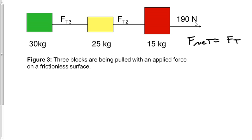Let's start off with the 190 newton force. I'm going to say 190 newtons is going to equal the tension force, but it also equals the net force. Since it's acting on all three boxes, I would say 190 is equal to 70 times A. We can figure out that the acceleration is 2.7 meters per second squared for the system.